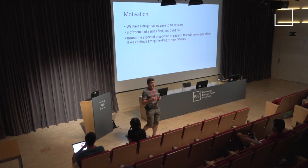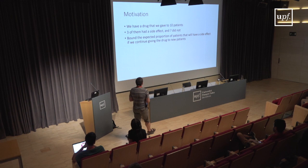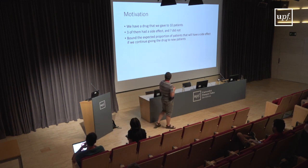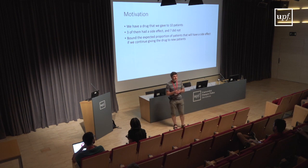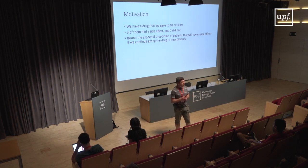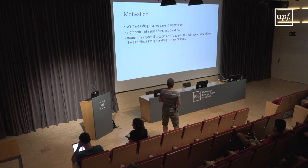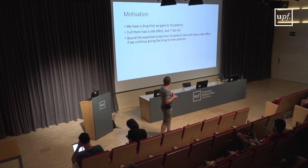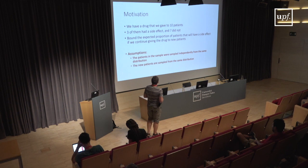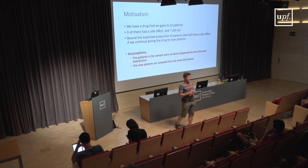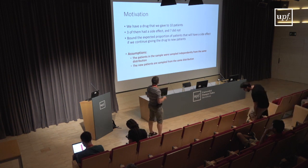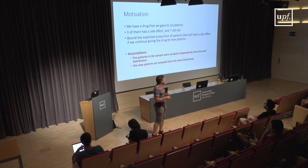Seven patients had a side effect and seven did not. We want to bound the expected proportion of patients that will have a side effect if we continue giving this same drug to new patients. When we ask this question, there are two assumptions we are making. The first assumption is that the patients in the sample are sampled independently from the same distribution. The second assumption is that the new patients are sampled from the same distribution as the patients we validated the treatment on.